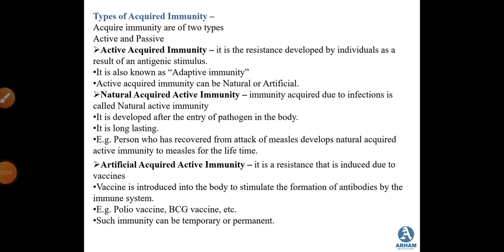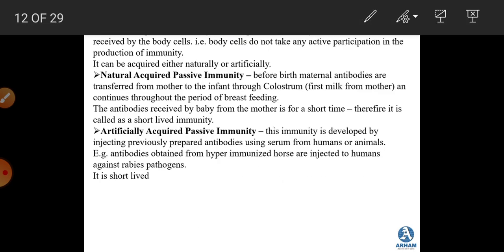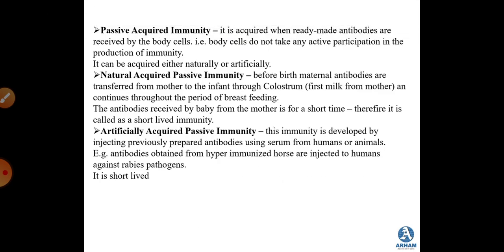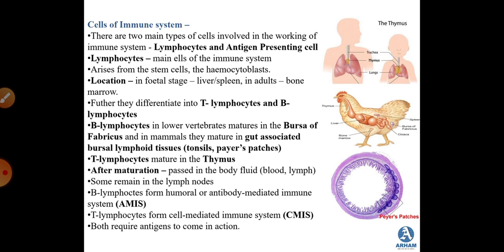Hello students, we are doing chapter number 10, Human Health and Diseases. In the previous session we completed the types of acquired immunity — we studied that acquired immunity is of two types: active and passive, and both are further divided into natural and artificial. We then moved on to the cells of the immune system.